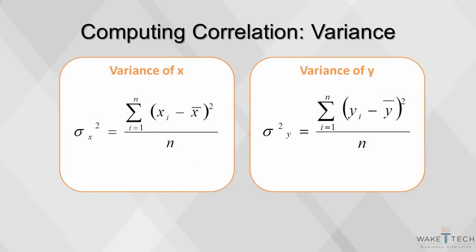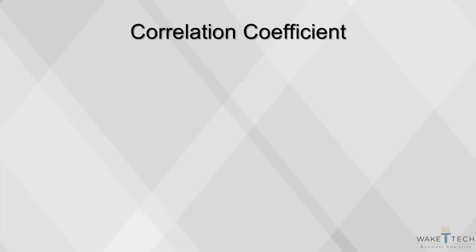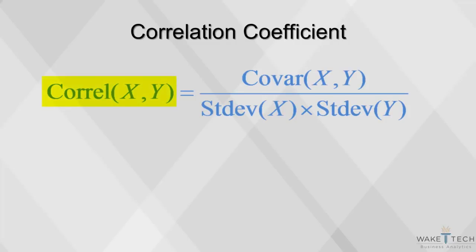To compute correlation, we'll need information on standard deviation and covariance. The variance is the dispersion within a variable x or y, or the squared average deviation from the mean. The covariance is the dispersion of x multiplied by the dispersion in y; it is calculated as the average of the product of deviations in individual means. Using variance and covariance, we can compute the correlation coefficient as the covariance of x and y divided by the standard deviation of x, multiplied by the standard deviation in y.